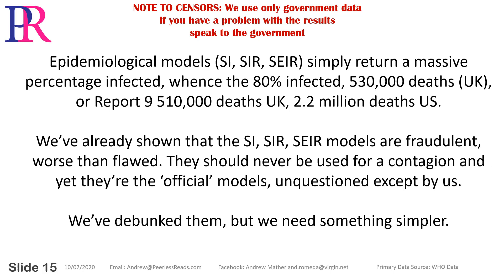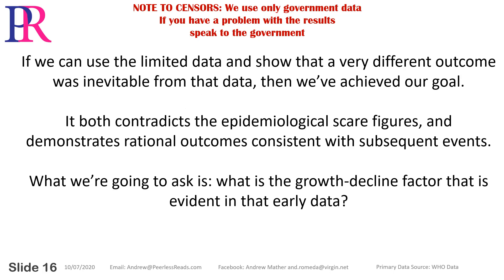Epidemiological models — SI, SIR, SEIR — simply return a massive percentage infected, hence the 80% infected, 530,000 deaths in the UK, Report 9's 510,000 deaths in the UK, and 2.2 million deaths in the US. We've already shown these models are fraudulent — worse than flawed — and should never be used for a contagion. We've debunked them, but we need something simpler. If we can use limited data to show that a very different outcome was inevitable, we've both contradicted the scare figures and demonstrated rational outcomes consistent with subsequent events.